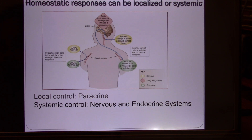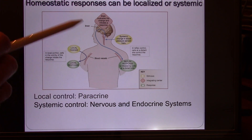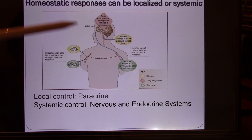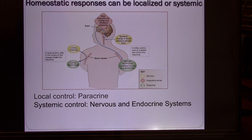Homeostatic responses can be local or systemic. Maintaining your body temperature is systemic because it requires long-distance communication. It could also be local — like paracrine signals in your digestive system, those are local signals. Or when we talk about the renal system, your renal control of your glomerular filtration rate — your GFR needs to be constant. This feedback and control are mainly local, so they are paracrine. If it's systemic control — long-distance control — your body has two long-distance control systems.